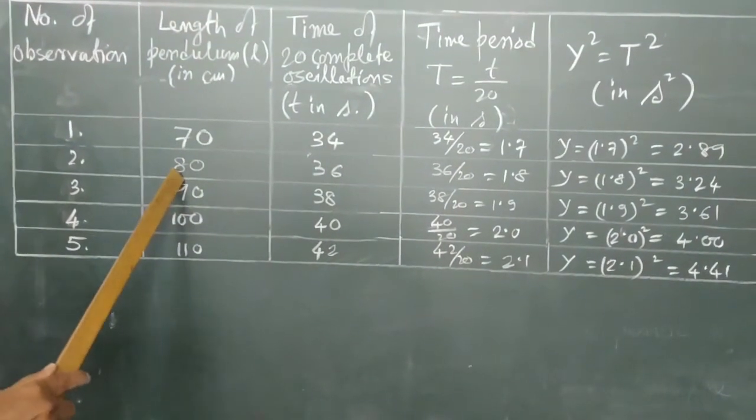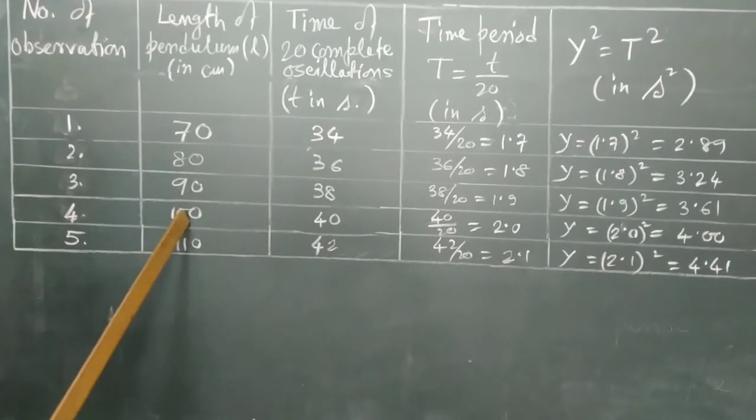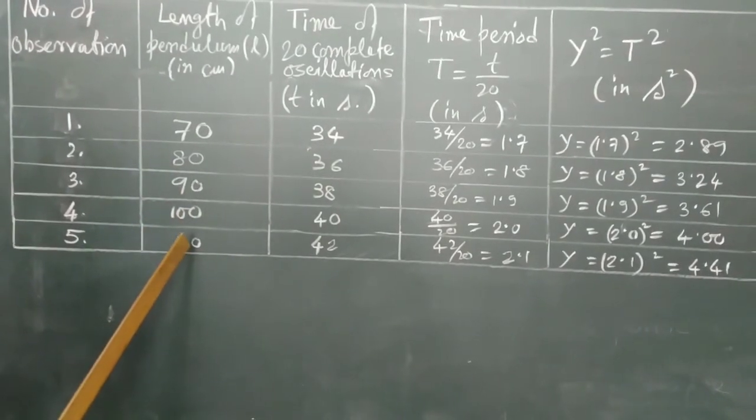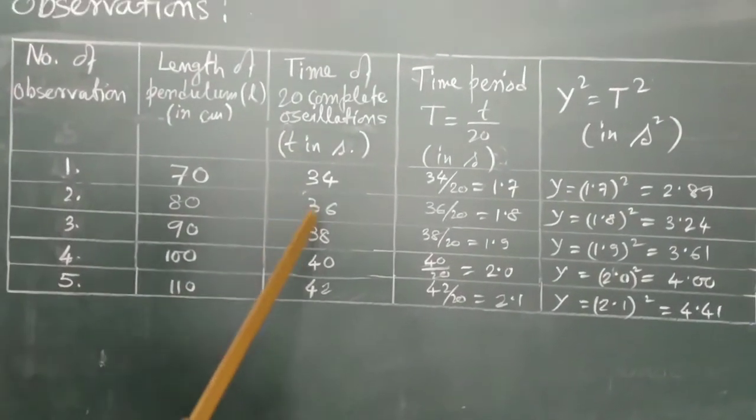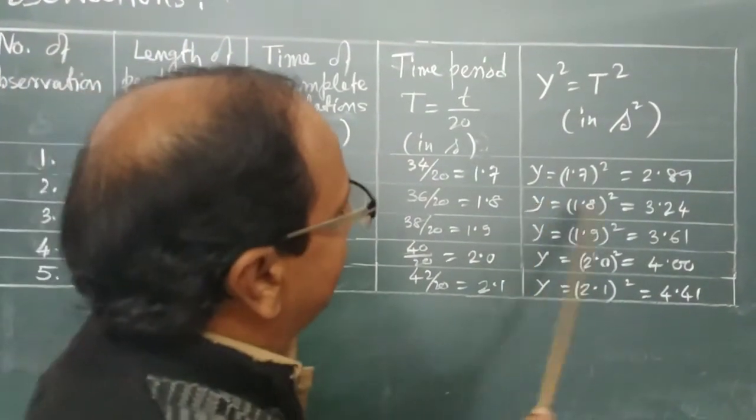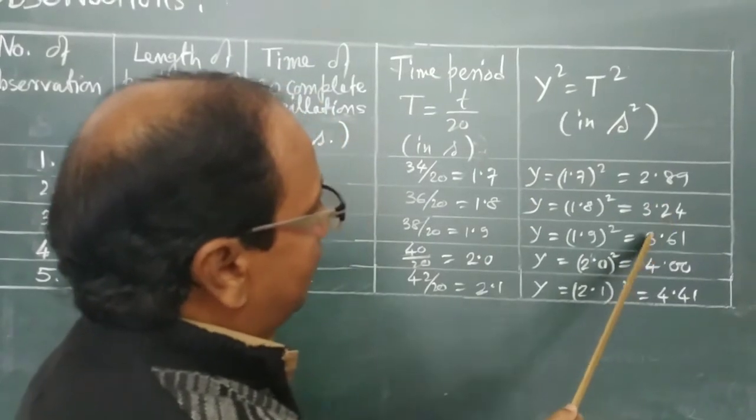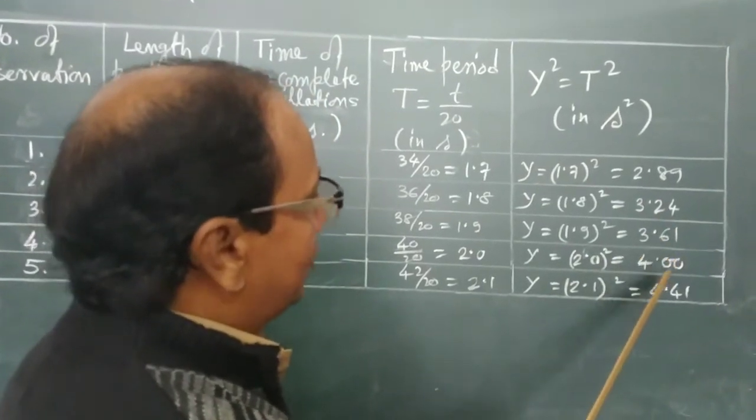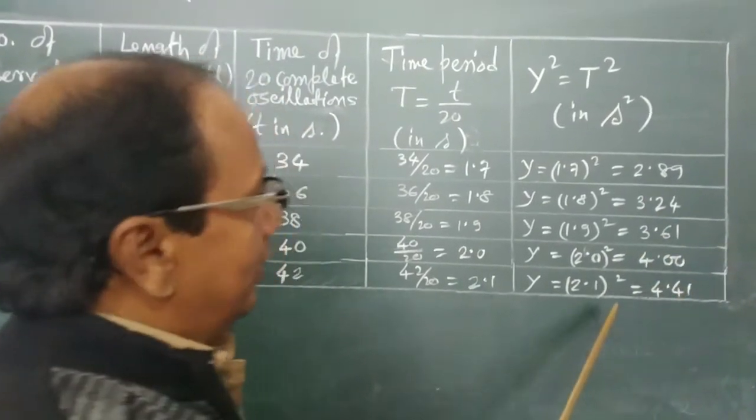for 80 cm, 90 cm, 100 cm, and 110 cm, we will see the calculation and the values of Y will be 3.24, 3.61, 4.00, and 4.41 respectively.